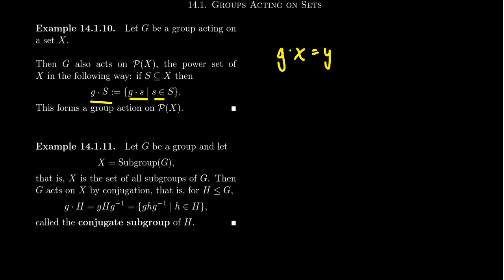we'd have to check that the identity axiom holds. That is to say, if the identity element of the group acts on a set, you get back the original set.